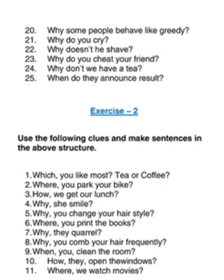Now we come to exercise two, where you have clue words and have to make the WH question. First: Which do you like most - tea or coffee? Second: Where do you park your bike? - The subject is 'you', so you get 'do'. Third: How do we get our lunch? Fourth: Why does she smile? - The subject is 'she', so you use 'does'. Fifth: Why do you change your hairstyle? - It's a regular action.